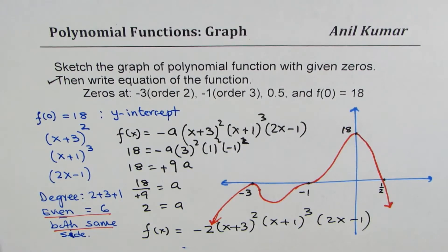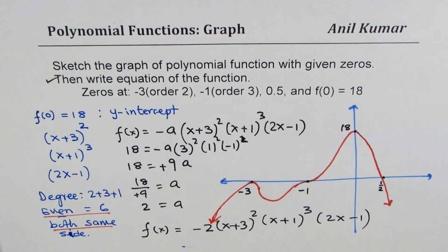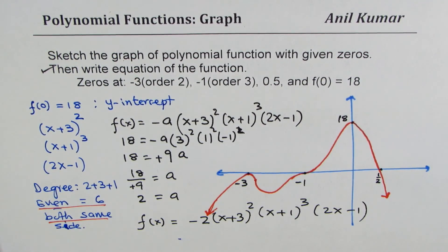So, we have clearly sketched the function. If you use the scale, it would be much better. However, it gives you a fairly good idea of how the polynomial graph will look like. And the equation of this graph is with leading coefficient negative, indicating that both sides are facing downwards. I hope this is absolutely clear. Feel free to write your comments and share your views. If you like and subscribe to my videos, that would be great. Thanks for watching and all the best.